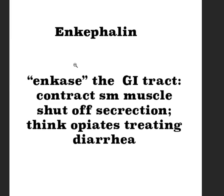So for VIP we have: a secretin-like function, dilation/relaxation of the lower esophageal sphincter, and dip and drip — increasing luminal water. Now, enkephalin is a little more minor. Enkephalin causes encasement of the GI tract — it contracts the smooth muscle and shuts off secretion. You can remember this because opiates are used for treating diarrhea: you close and contract the smooth muscles so the bolus is effectively massaged, water is more absorbed, and secretion is stopped.